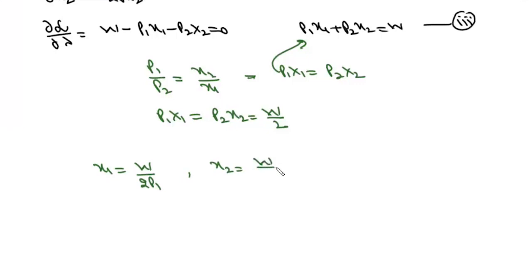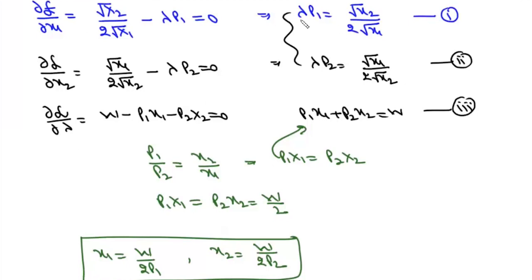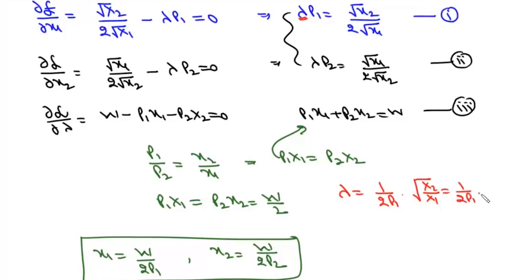So the utility-maximizing quantities are x1 = w/(2p1) and x2 = w/(2p2). We can also find the Lagrange multiplier: λ = (1/(2p1))·√(x2/x1) = (1/(2p1))·√(p1/p2), which simplifies to 1/(2√(p1·p2)).